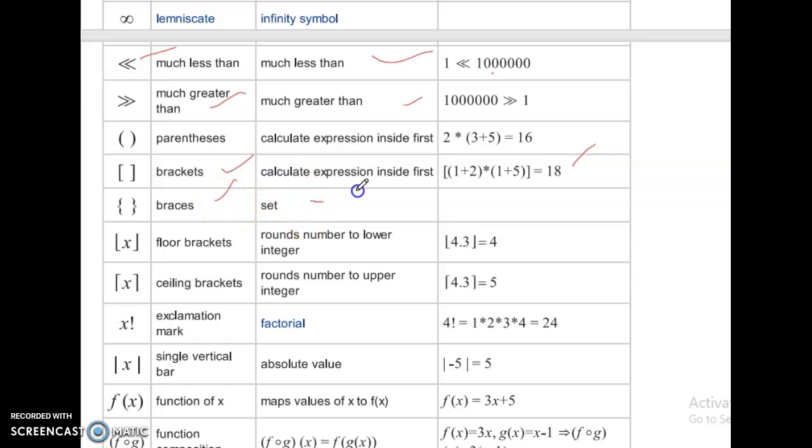Braces. Floor brackets. Rounds number to lower integer. 4.3 rounds number so you can take only 4. Ceiling brackets. Rounds number to upper integer. 4 after upper integer 5, that's right.